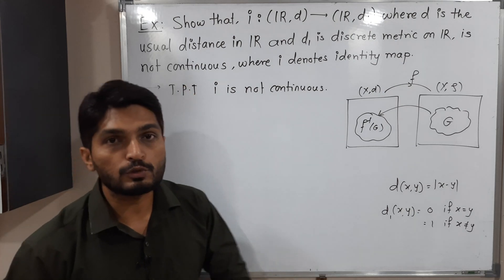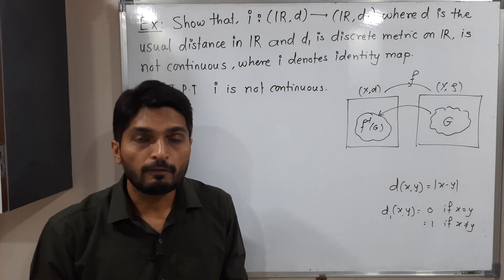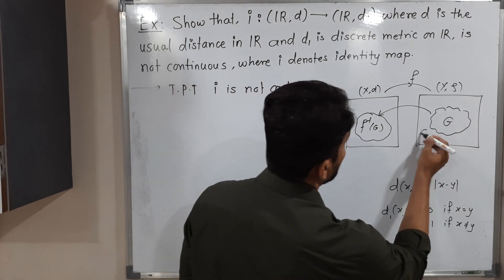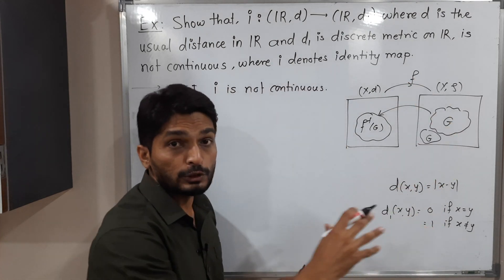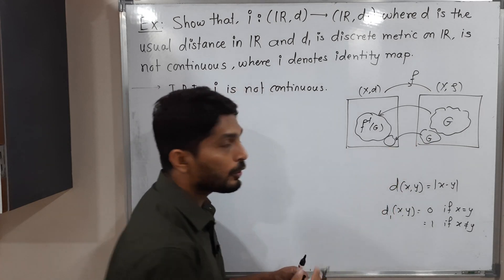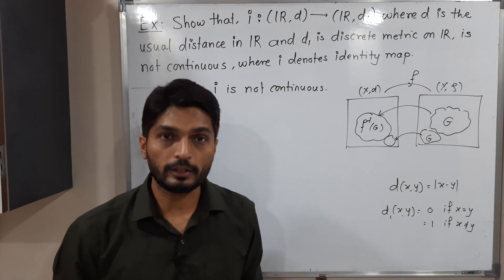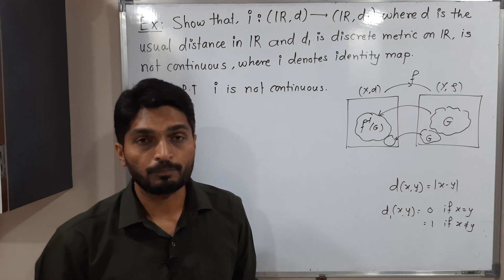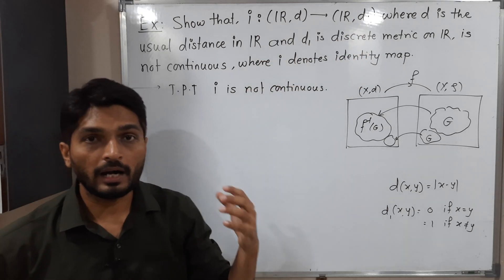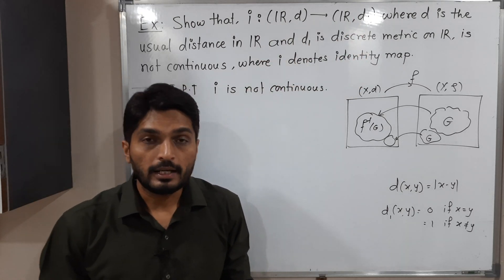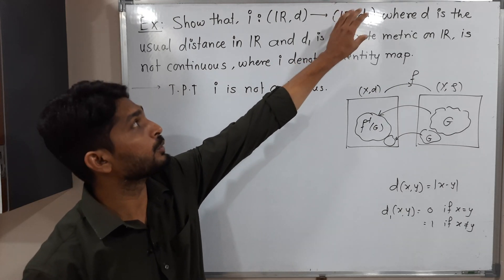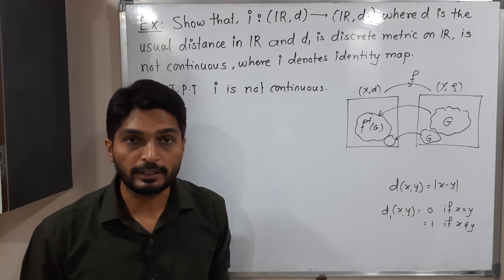Here we have to prove the function is not continuous. That means we have to find one set G in the codomain which is open, but whose inverse image is not open in the domain. So our domain is Rd and our codomain is Rd1. We have to find an open set in the codomain and prove its inverse image is not open in the domain.